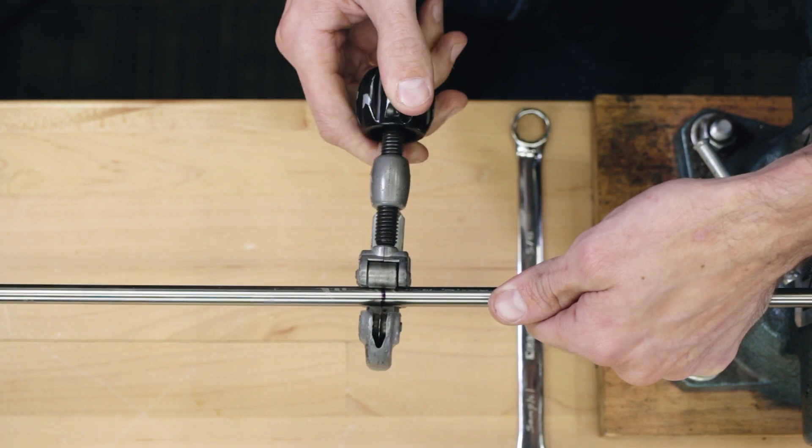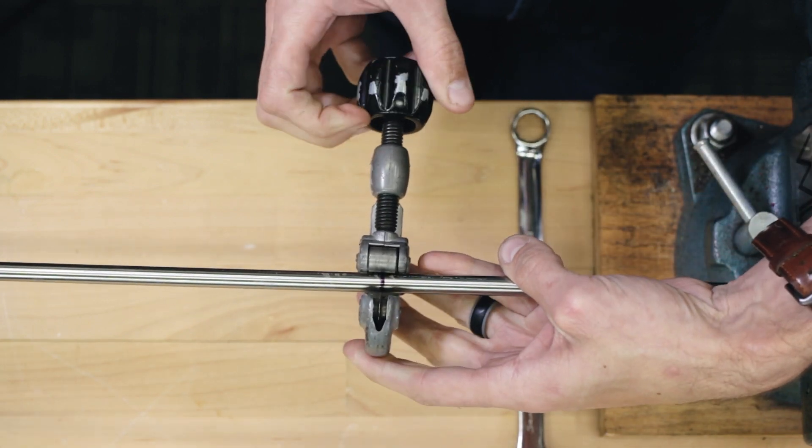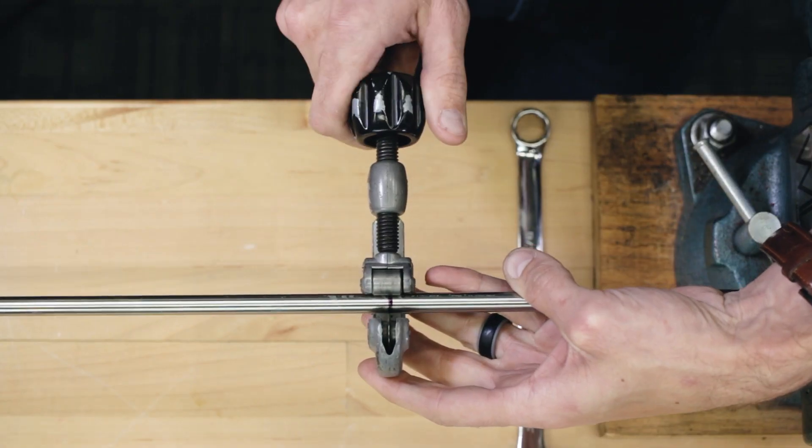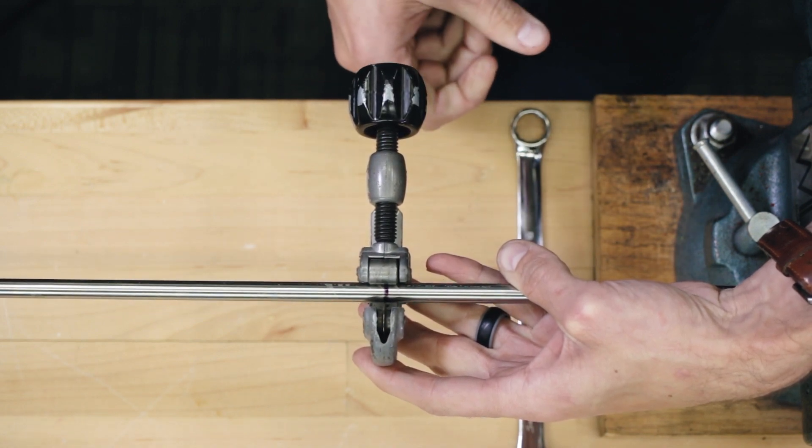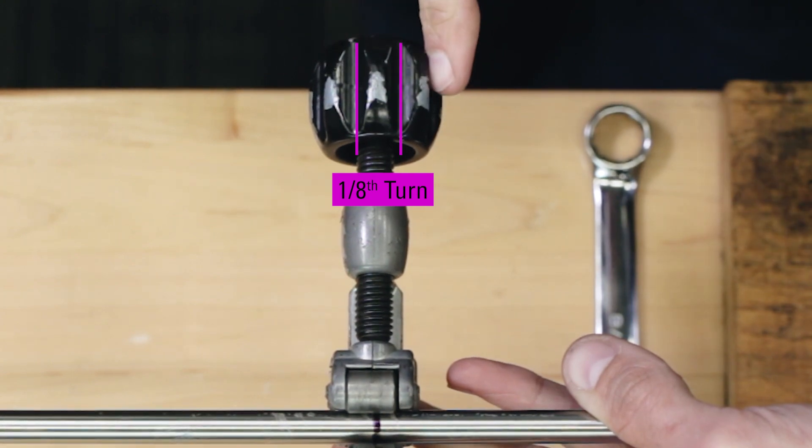A tubing cutter works by rotating around the tubing and gradually tightening the cutting wheel until it cuts through the tubing. Position the mark in the cutter. Turn the handle until the wheel touches the tubing. Then turn the handle an extra 1/16th turn. The marks on the handle indicate a 1/8th turn, so use that as a reference. Rotate the cutter around the tube.